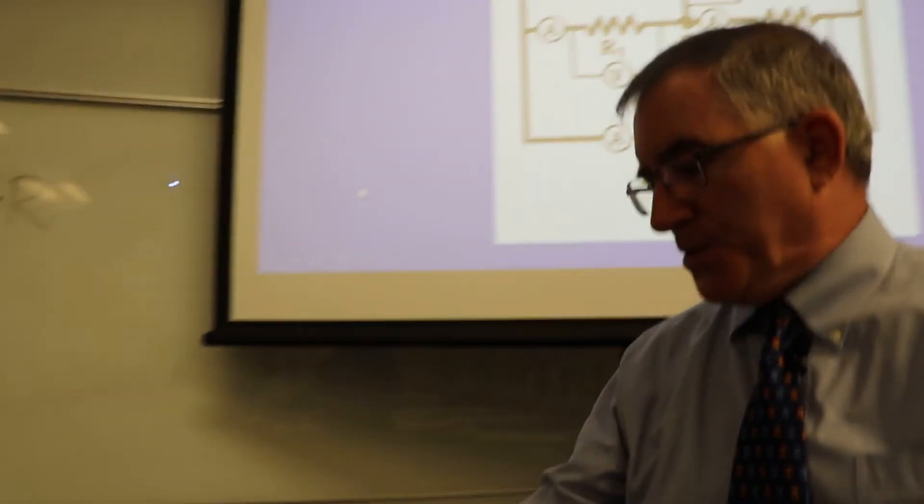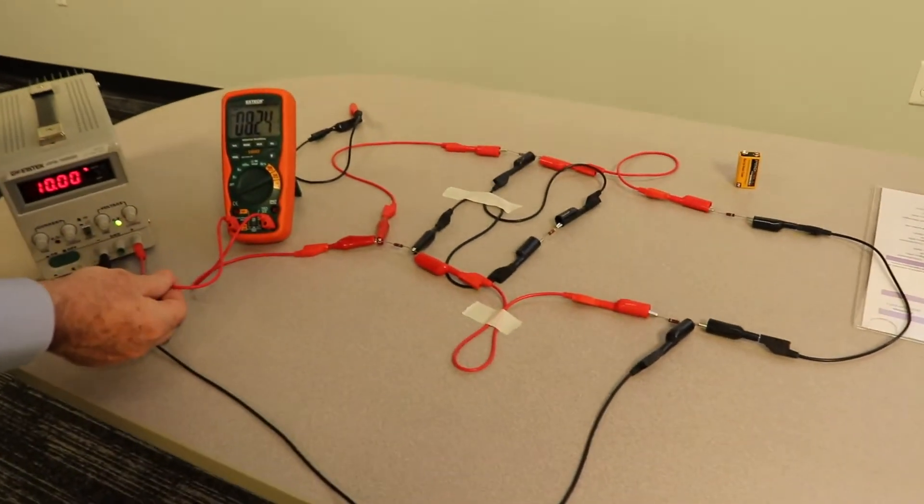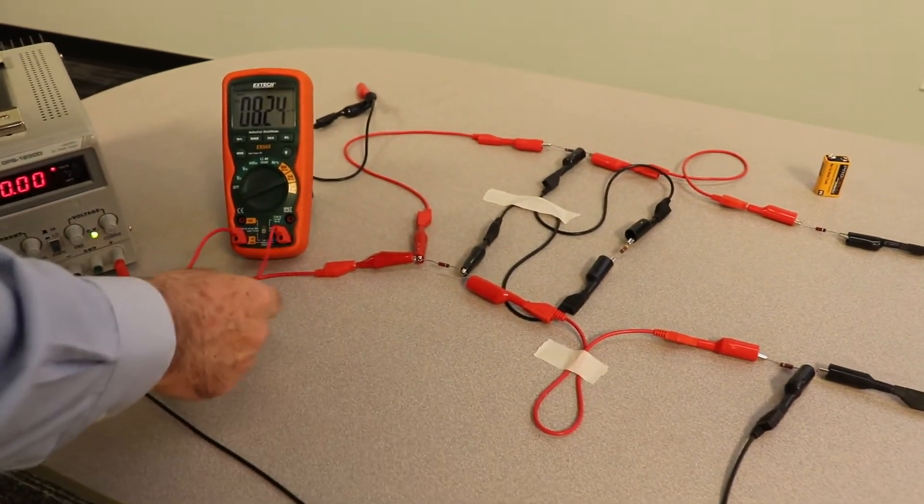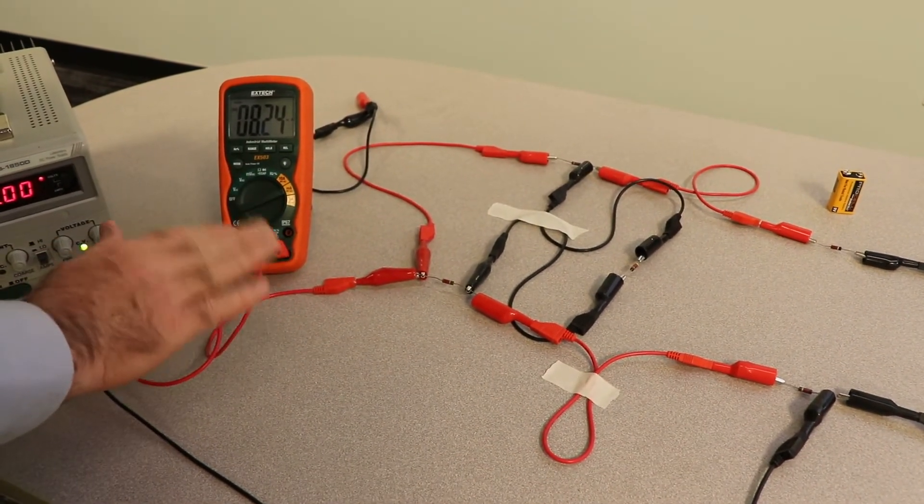Now I have the whole circuit set up right here on the table. You can see I got my red power coming out of here set for 10 volts. Now this is an ammeter. I'm going to talk about that in one second.